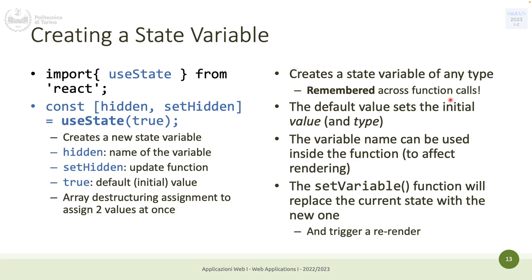When you call the set state variable — setHidden, setWhatever — it will replace the entire state saved to that moment. So if the state is just true/false you want to replace true with false. But if the state is an array and you want to change a small piece, you cannot just update that piece — you have to provide the entire array even if you changed only a small thing.